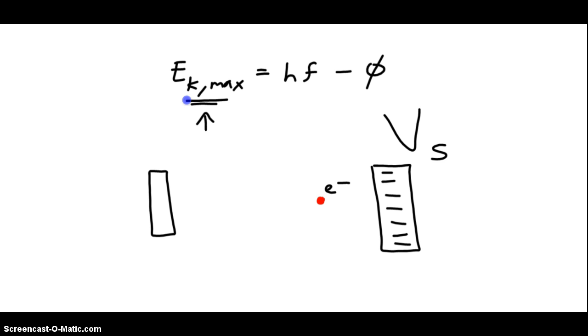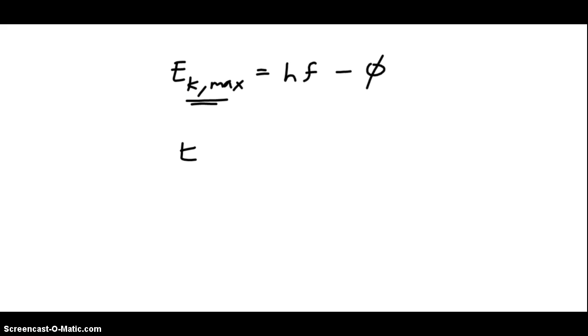In other words, the larger the maximum kinetic energy, the larger the stopping voltage must be. Here's the equation, which says the exact same thing. The maximum kinetic energy is directly proportional to the stopping voltage, and is the stopping voltage times the charge of an electron.